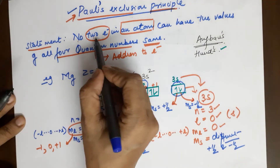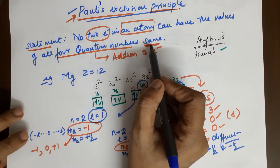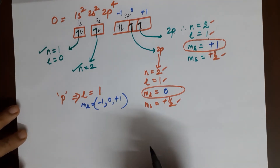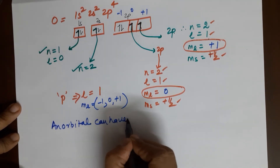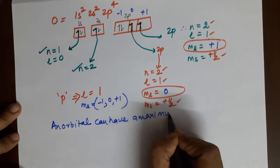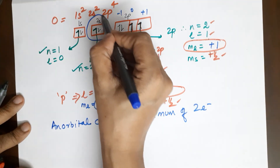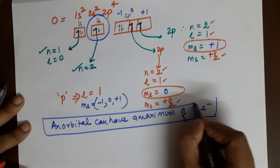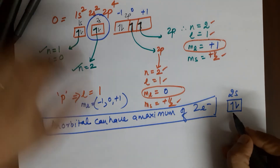Pauli's Exclusion Principle states that no two electrons in an atom can have the values of all four quantum numbers the same. We can restate this rule another way: an orbital can have a maximum of two electrons. Let me justify this using the 2s orbital as an example.